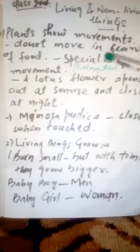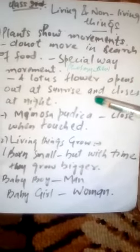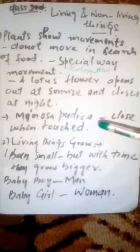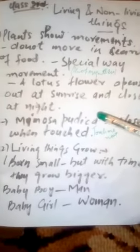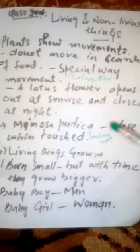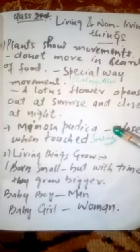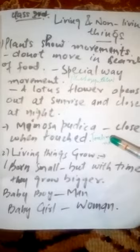The process by which plants make their own food is called photosynthesis. For example, a lotus flower opens at sunrise and closes at night. There is one more plant called Mimosa pudica, commonly known as the touch-me-not plant. When Mimosa pudica is touched, its petals get curled and close. So this is a kind of movement which Mimosa pudica shows.